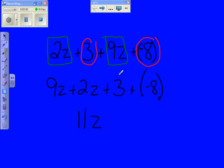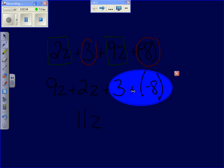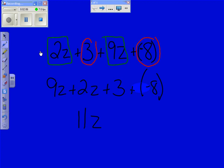And I also have like terms right here, two constants that are alike. So I can go ahead and combine those too. Plus 3 plus negative 8 is negative 5.